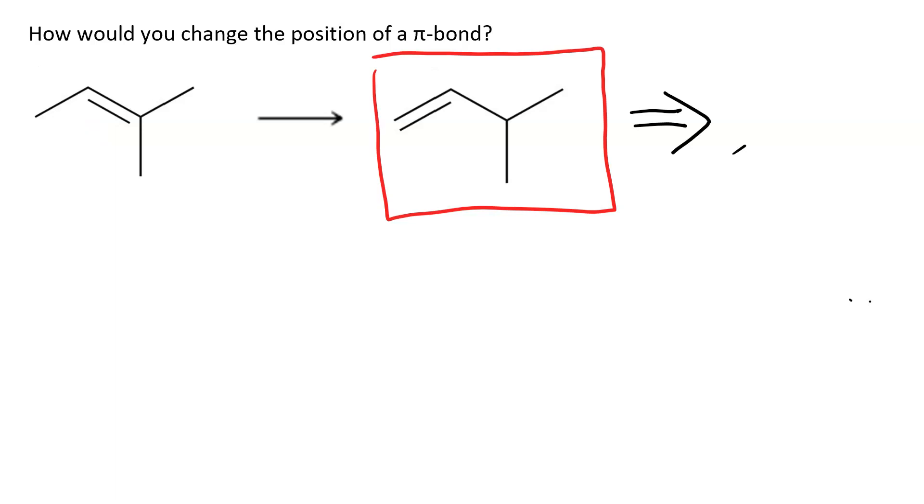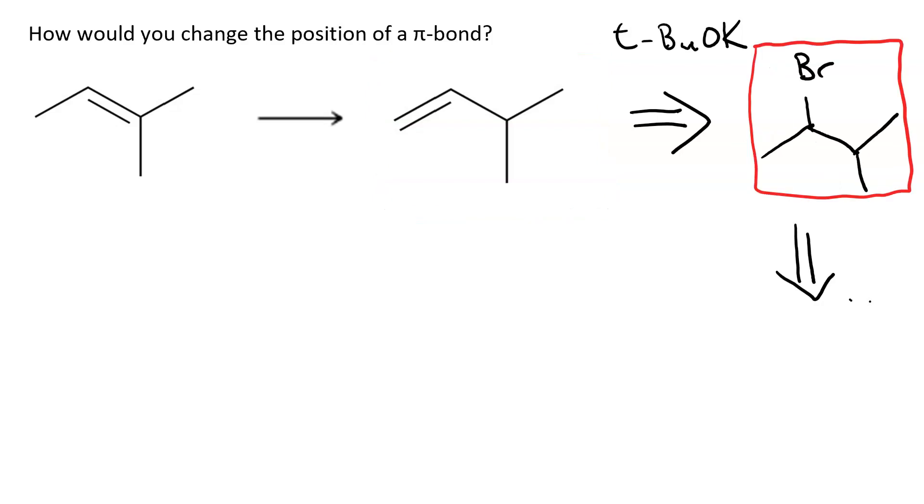And if we pay attention to our regiochemistry, we'll move things in the right direction. We can make 3-methyl-1-butene by doing Hoffman elimination from 2-bromo-3-methylbutane. So we'll use tert-butoxide.